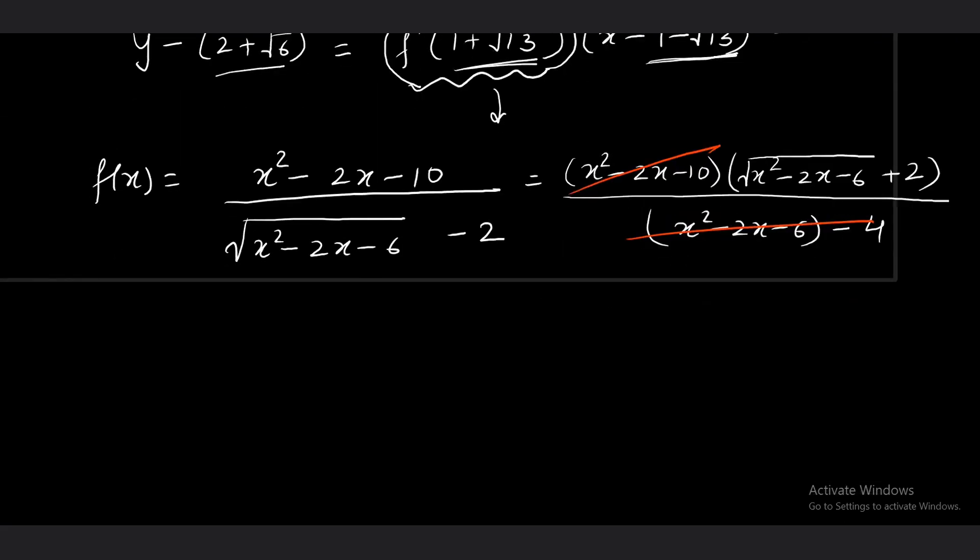We are getting the same factor in the numerator and denominator and the expression. The function f(x) has now become a little easier. A little comfortable form is appearing. f(x), I'll replace with y. This is root of (x - 1)^2